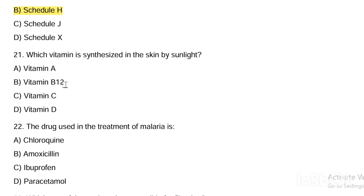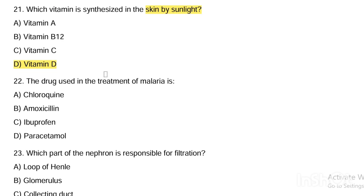Next question. Which vitamin is synthesized in the skin by sunlight? Option A, vitamin A. Option B, vitamin B12. Option C, vitamin C. Option D, vitamin D. Answer: vitamin D is synthesized by the skin via sunlight.